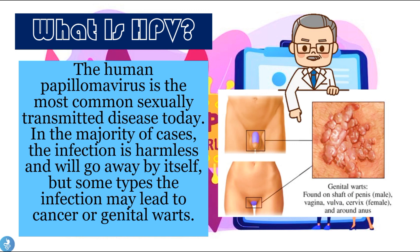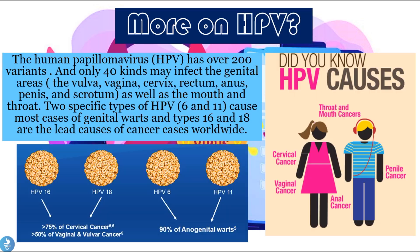Now let's take a closer look at the different types of HPV. The human papillomavirus has over 200 variants, and only 40 kinds may infect the genital areas, which includes the vulva, vagina, cervix, rectum, anus, penis, and scrotum, as well as the mouth and throat.